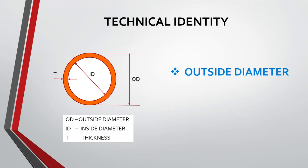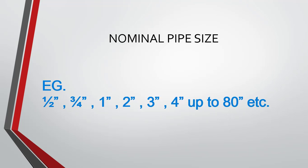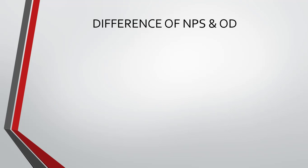Pipes are generally referred to by their outside diameter, commonly known in the industry as NPS. NPS is the common term used in industry to refer to a particular size of pipe. When someone says one inch, that means it is a one inch NPS pipe. NPS stands for Nominal Pipe Size. The nominal pipe size starts from half an inch up to 18 inches as per manufacturing standards, and is also available up to 80 inches. But what is the difference between NPS and OD?